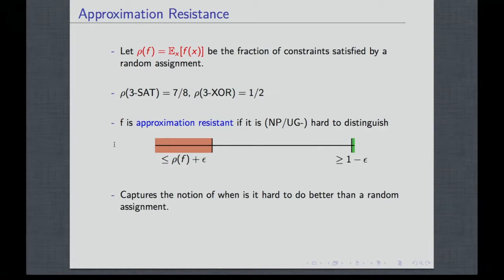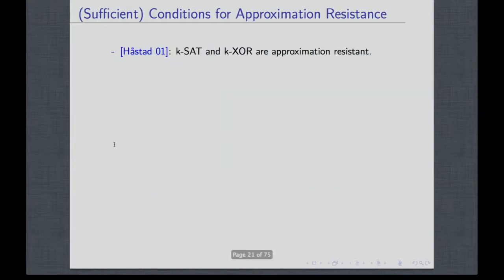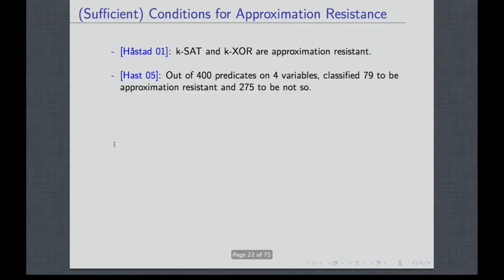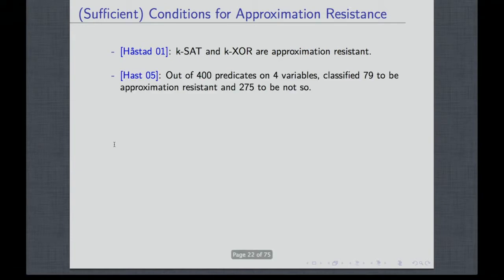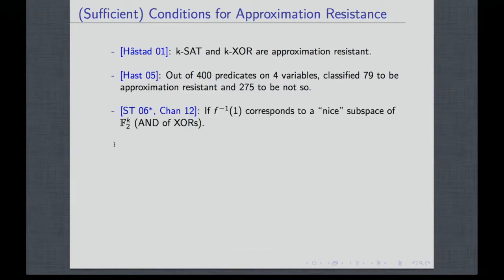This captures the notion of it being hard to do better than a random assignment. Before talking about characterizations, let me mention some sufficient conditions known to imply approximation resistance. The first classic result — from 1997, with the general version from 2001 — is that SAT and XOR are approximation-resistant for k variables where k is greater than or equal to 3. Hastad took this quite a bit further, studying predicates on four variables. Out of 400 non-trivial, non-isomorphic predicates, he classified 79 as approximation-resistant, 275 as not so, and the remaining 46 are open as far as I know.